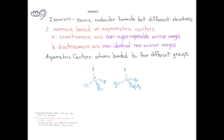In the second molecule, the carbon in the middle is also bonded to four different groups: a hydrogen, a methyl group, an ethyl group, and a bromine. So this second carbon in the middle is also an asymmetric center.